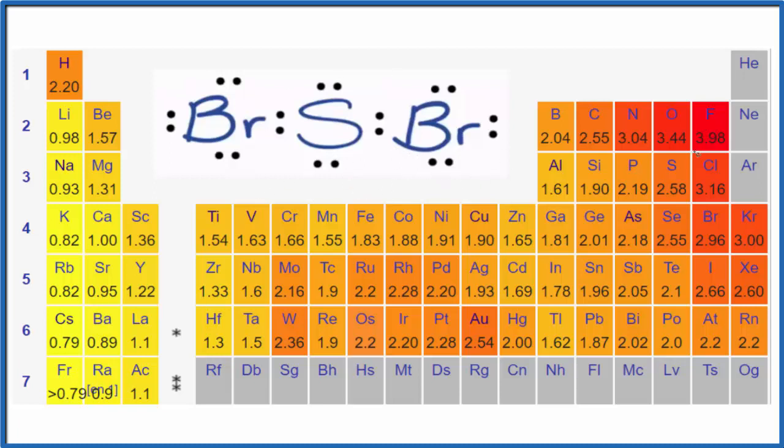If we look up sulfur right here, that's 2.58, that's its electronegativity value. Bromine 2.96, so they're pretty close. We can use this general rule of thumb here to figure out whether it's polar or nonpolar.